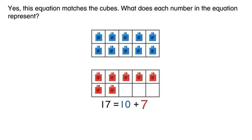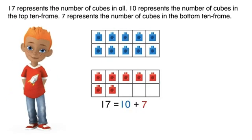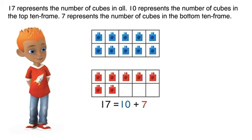What does each number in the equation represent? 17 represents the number of cubes in all. 10 represents the number of cubes in the top 10-frame. 7 represents the number of cubes in the bottom 10-frame.